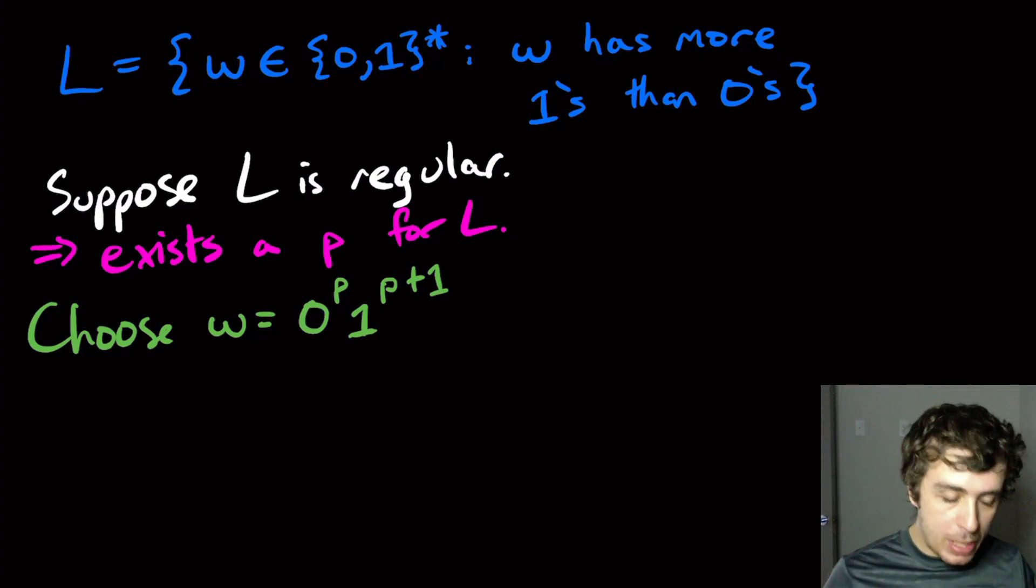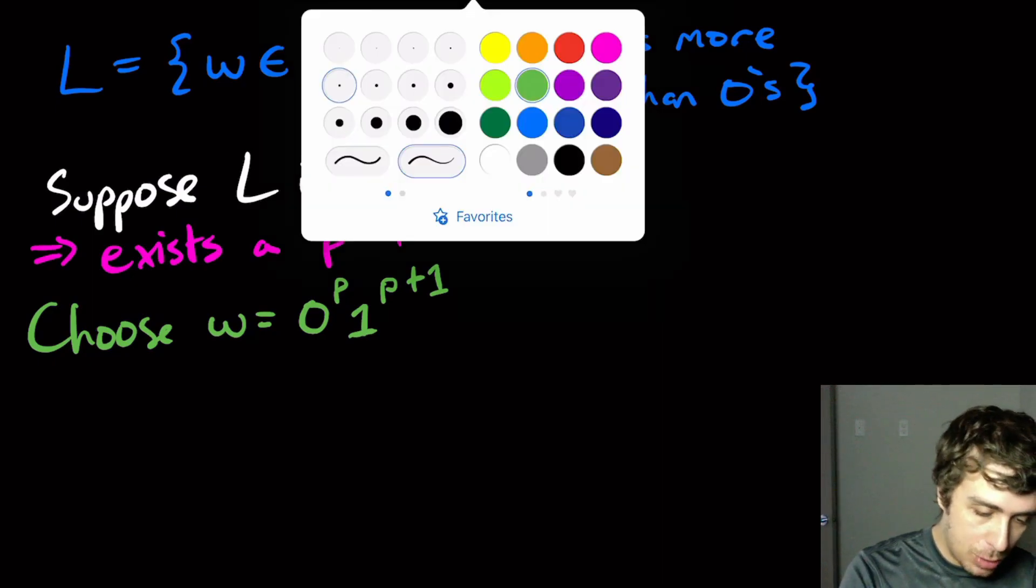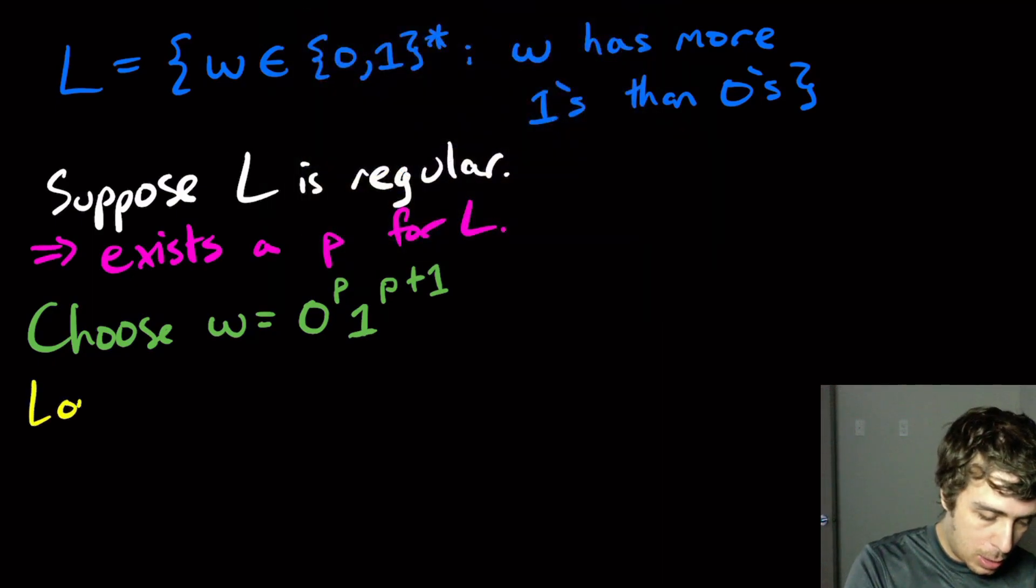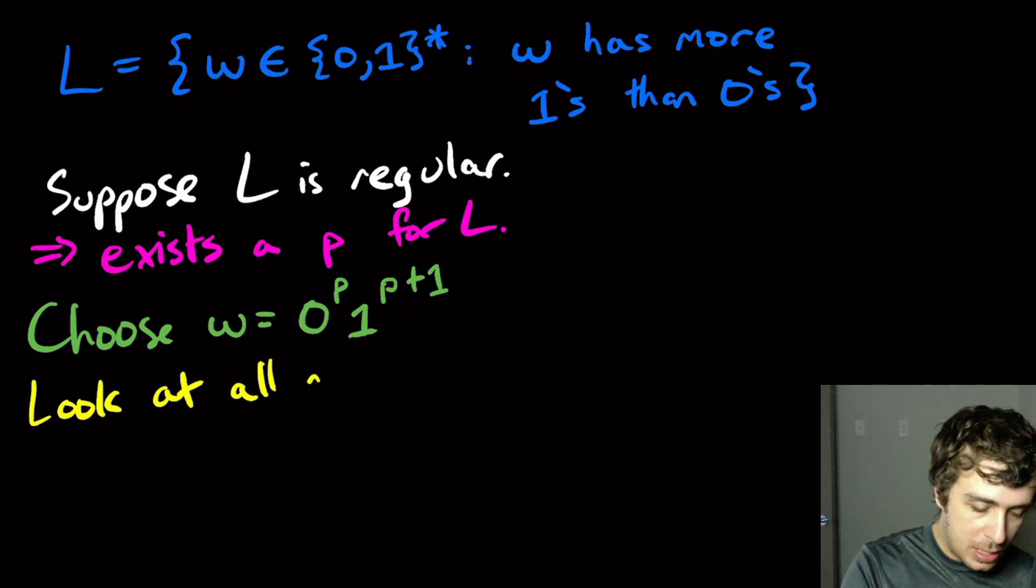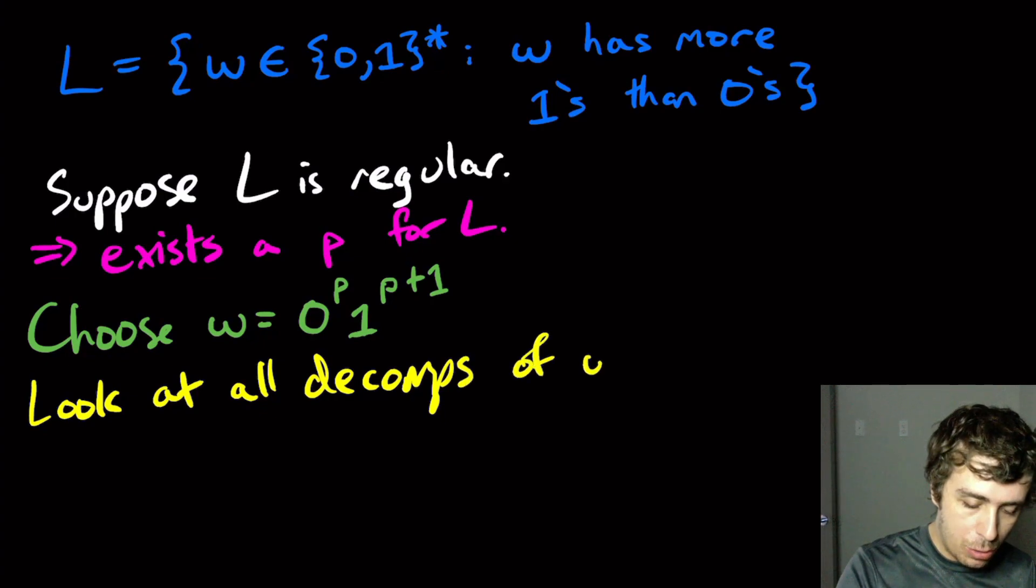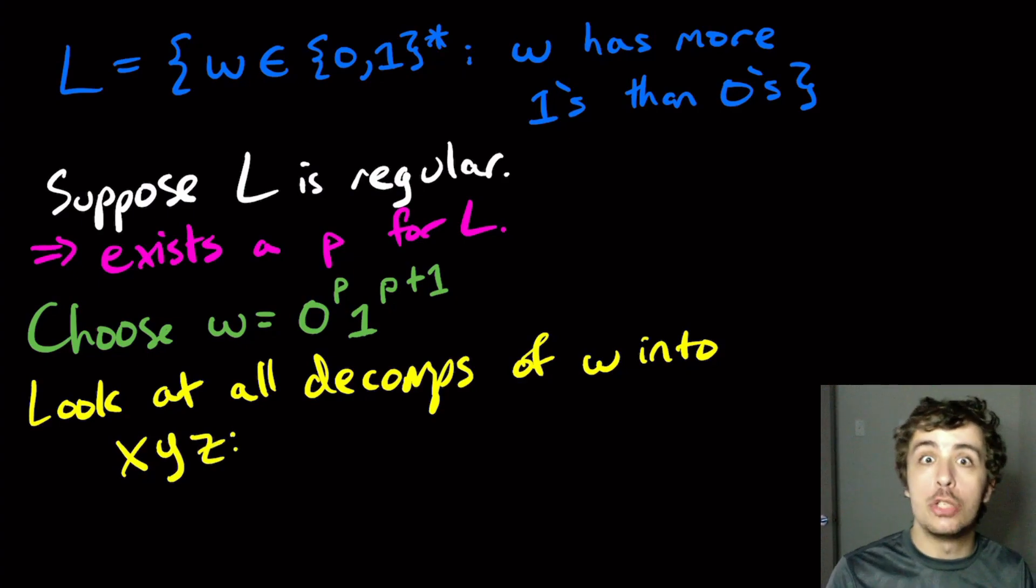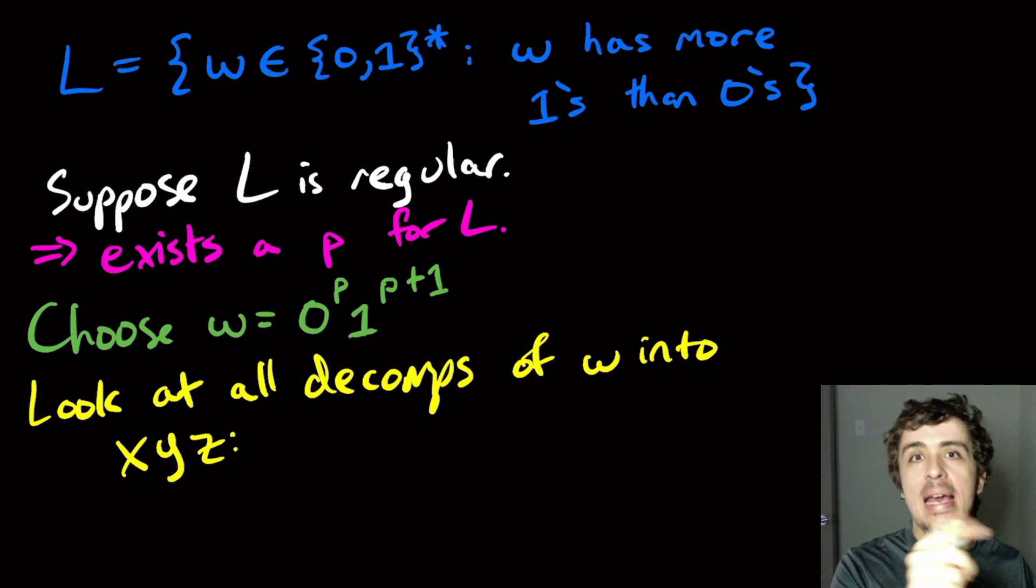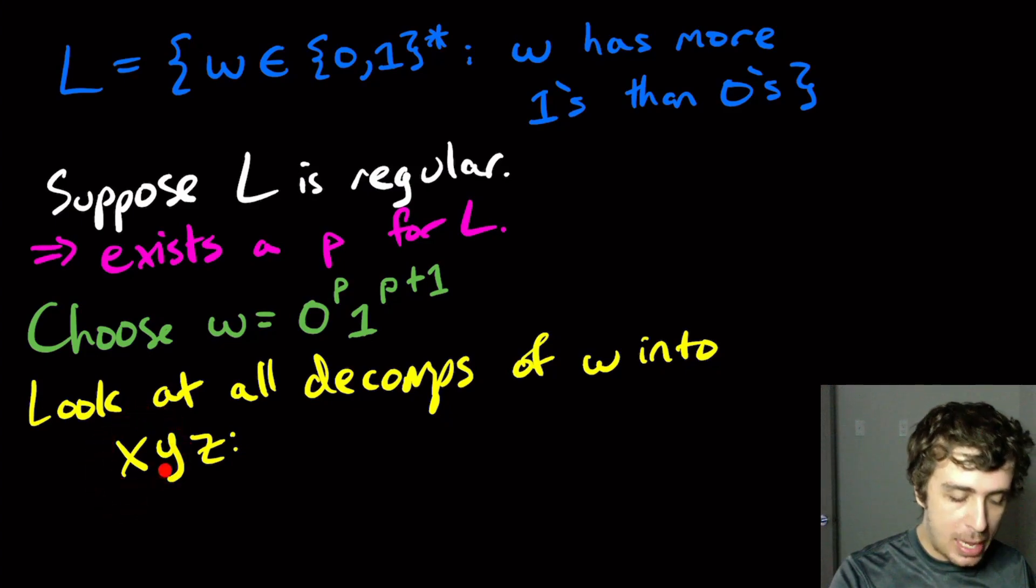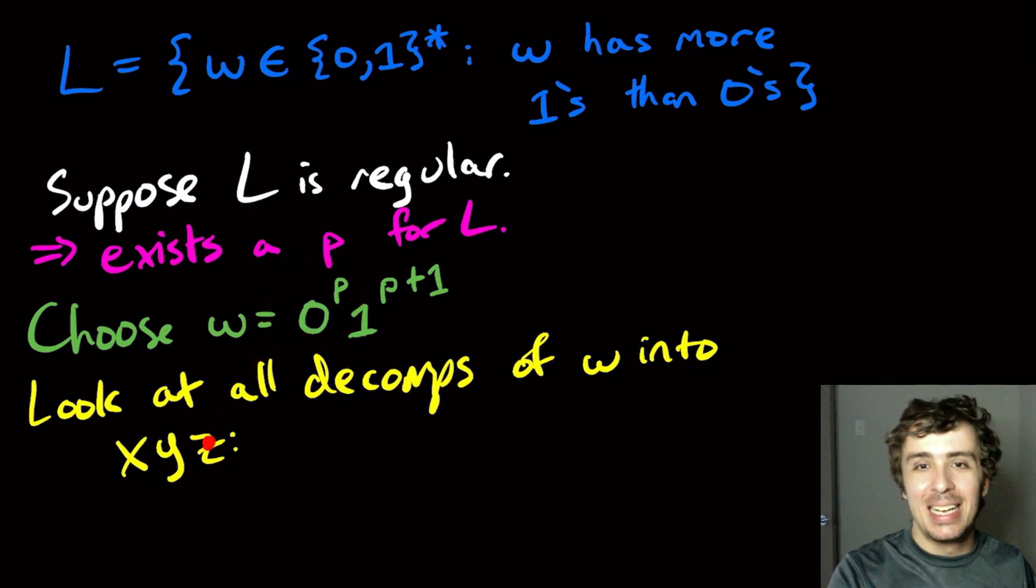Okay, so then what do we do here? Well, we got to look at all decompositions, as we always do. So we got to look at all decompositions of W into those three pieces, X, Y, and Z, according to the rules. That X, Y has length at most P and Y is not empty. So Y has at least one character. Well, since X and Y have at most P characters, and the first P of them are 0s, that means that X and Y only have 0s in them.